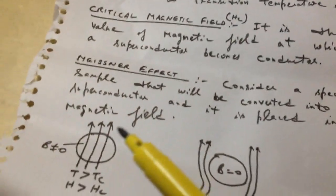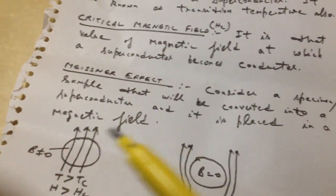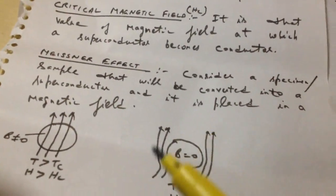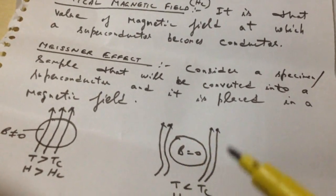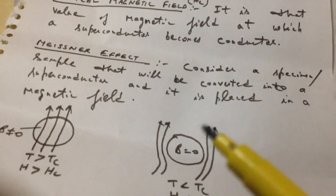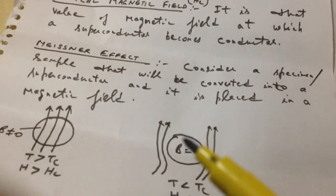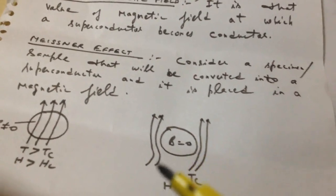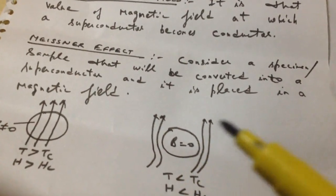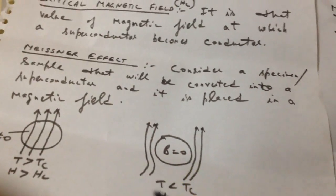The Meissner effect means the expulsion of magnetic lines of force from a superconducting specimen when it is cooled below the critical temperature.